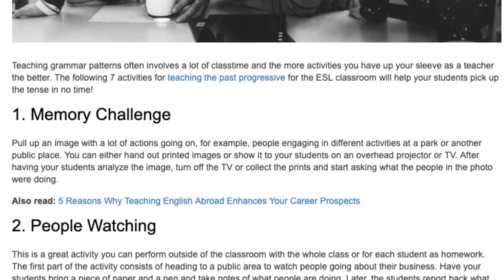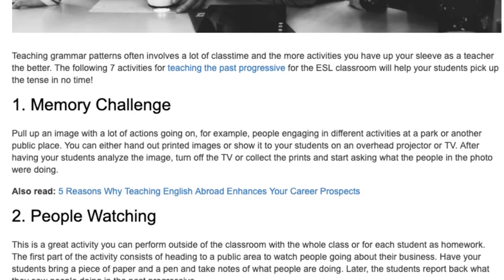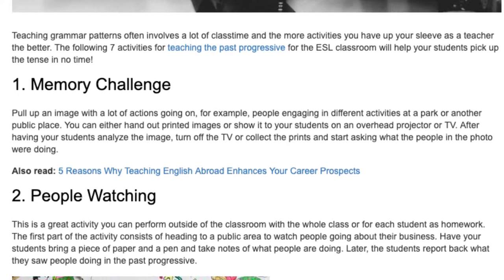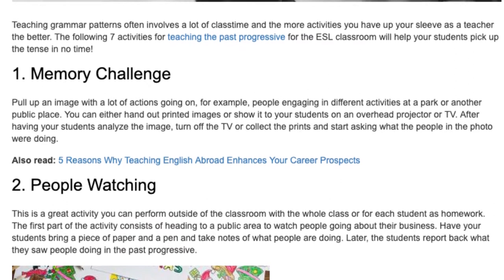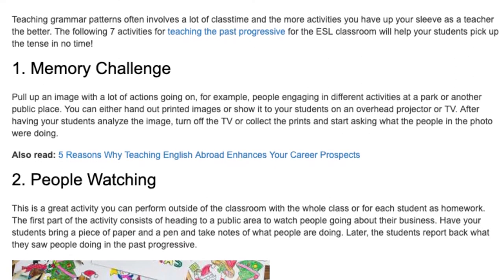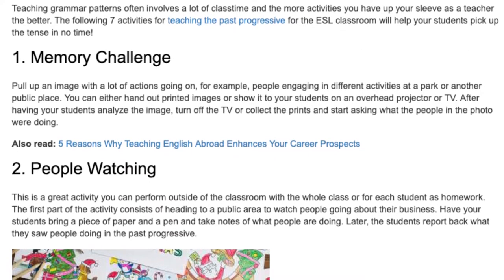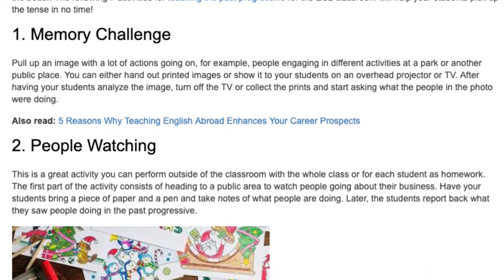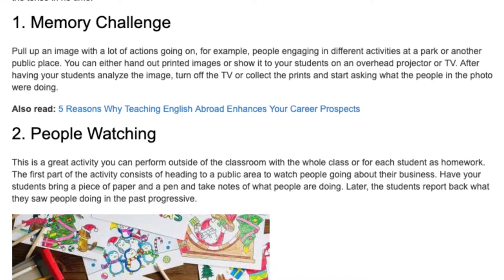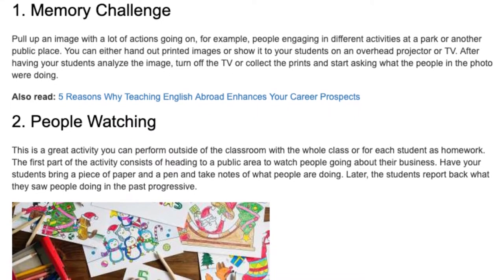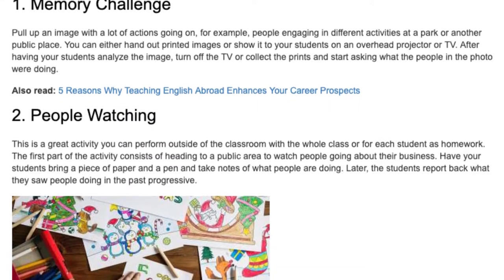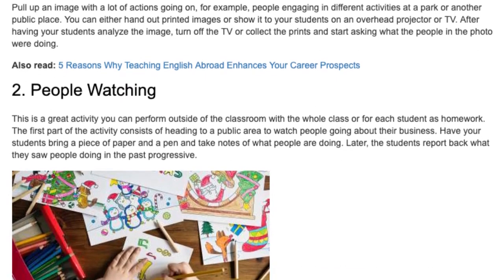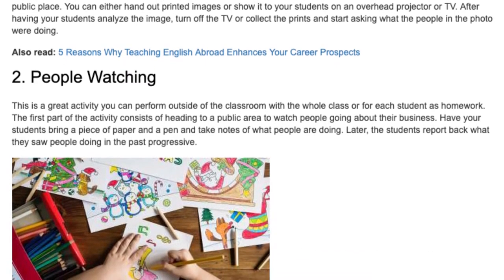Activity 2: People Watching. This is a great activity you can perform outside of the classroom with the whole class or for each student as homework. The first part of the activity consists of heading to a public area to watch people going about their business. Have your students bring a piece of paper and a pen and take notes of what people are doing. Later, the students report back what they saw people doing in the past progressive.